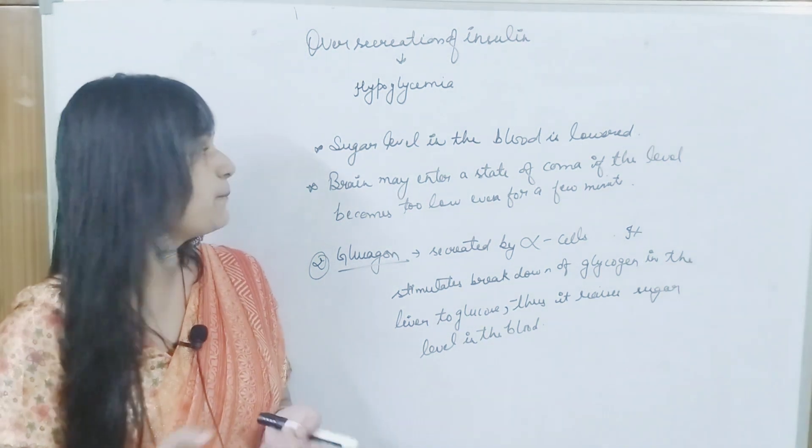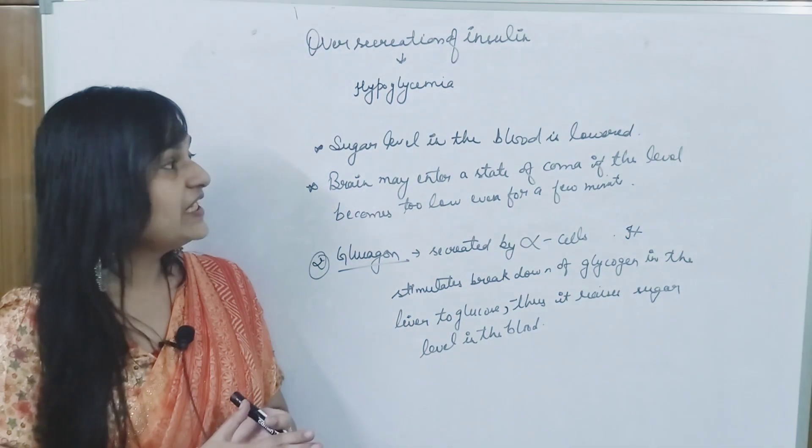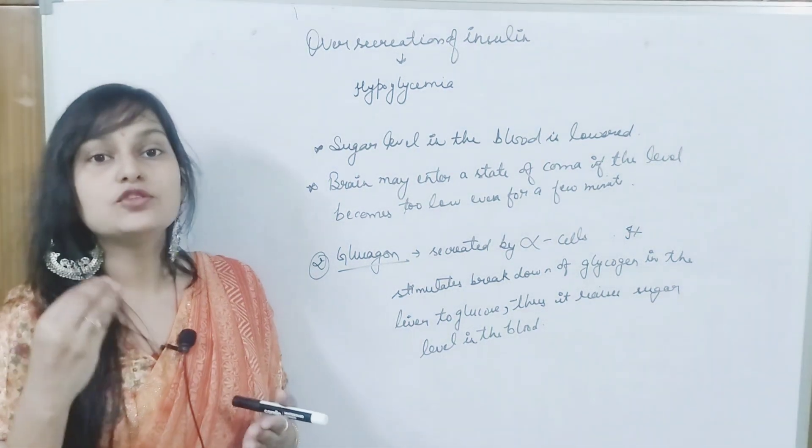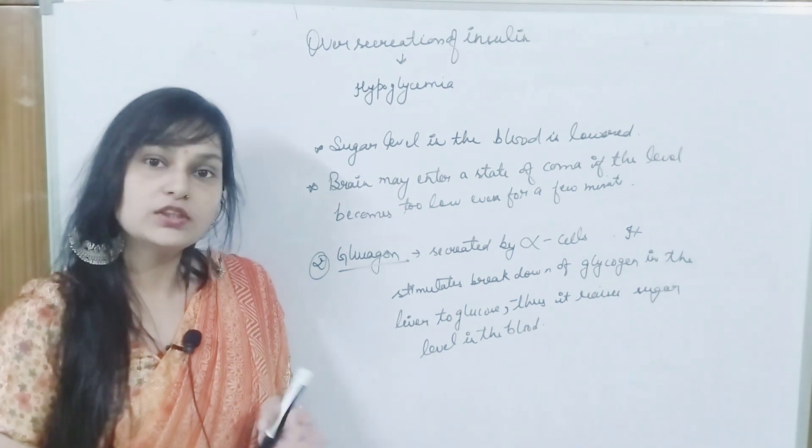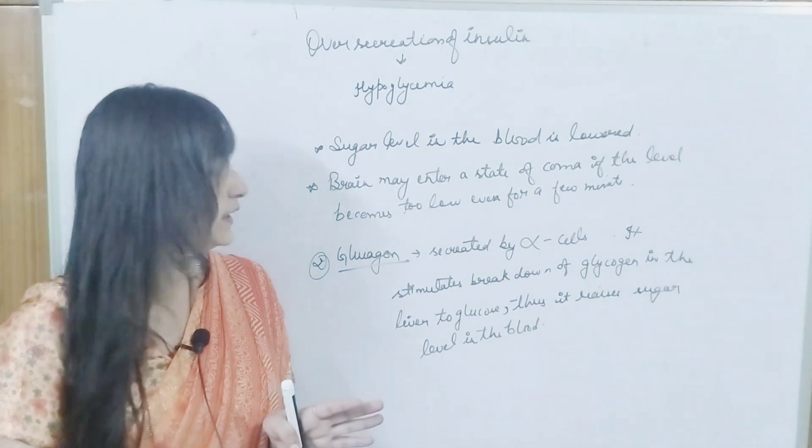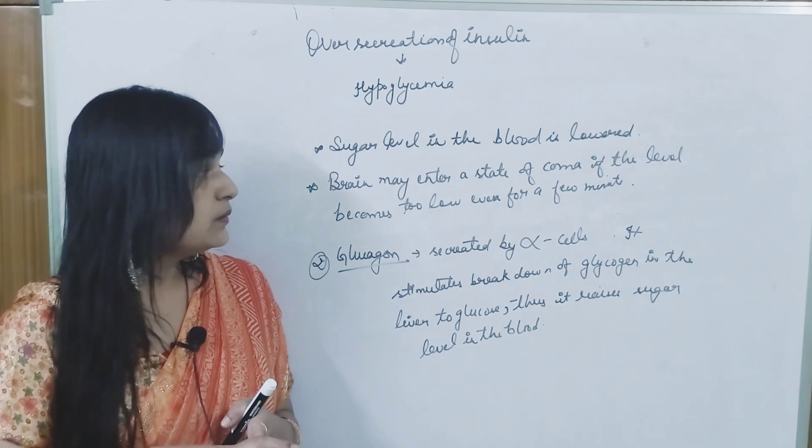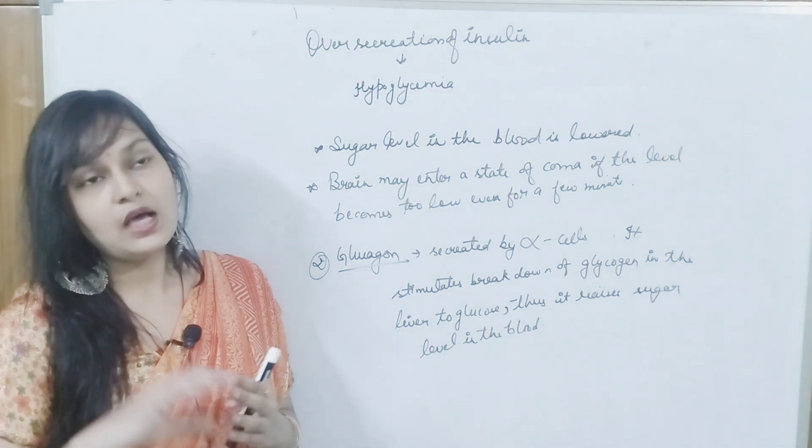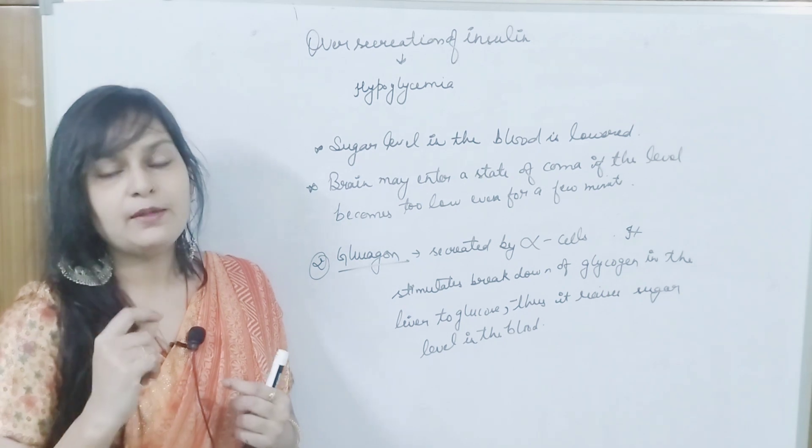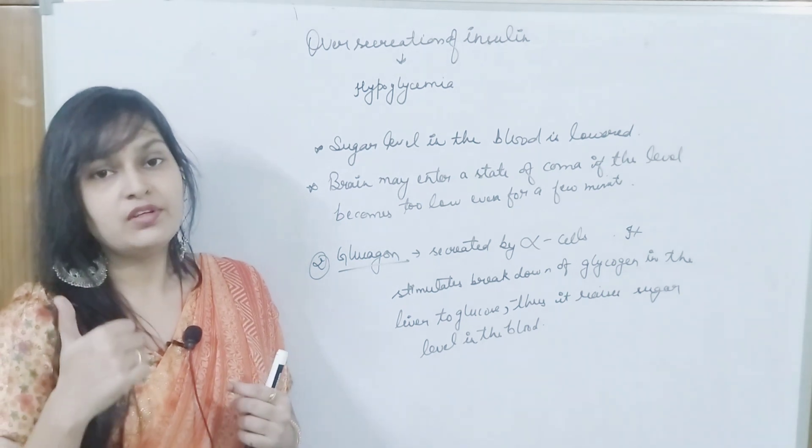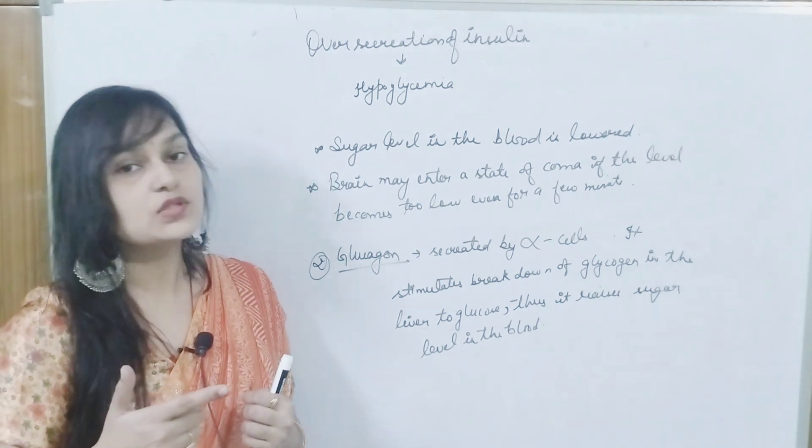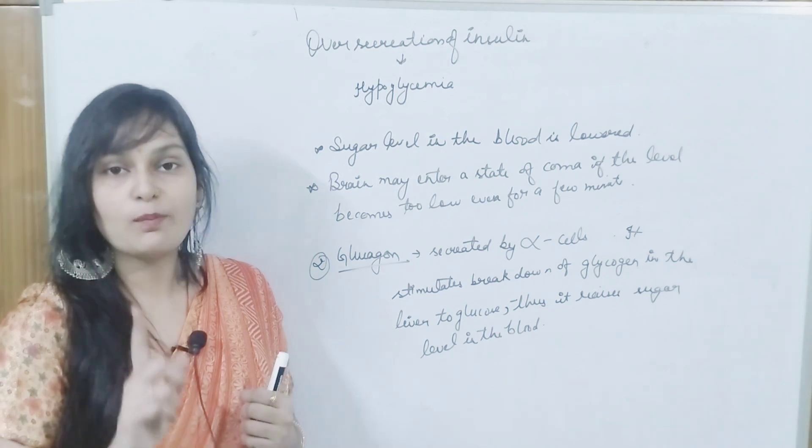Hypoglycemia. What condition is this? Sugar level in the blood is lower. When it becomes low, the brain may end in a state of coma if the level becomes too low even for a few minutes. If the blood sugar level drops for a few minutes, what will happen? The brain cells are in a coma state.